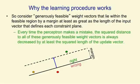We can make the claim that every time the perceptron makes a mistake, the squared distance to all of the generously feasible weight vectors will be decreased by at least the squared length of the input vector, which is the update we make.